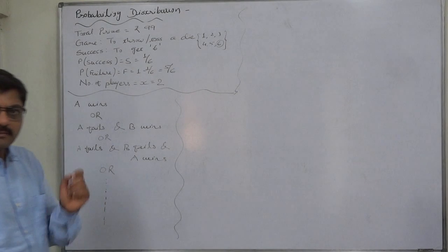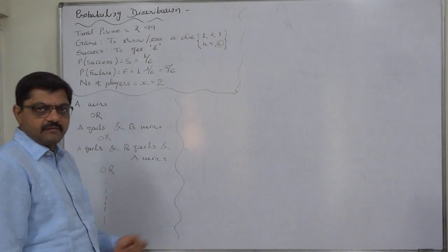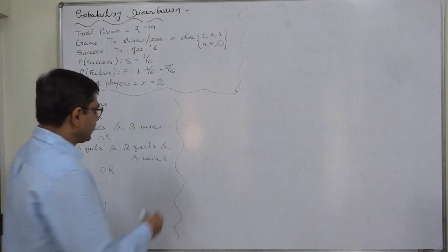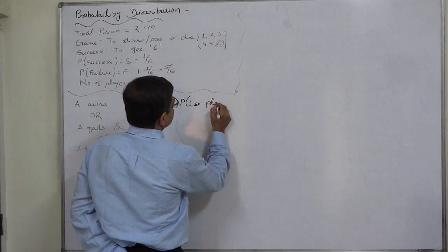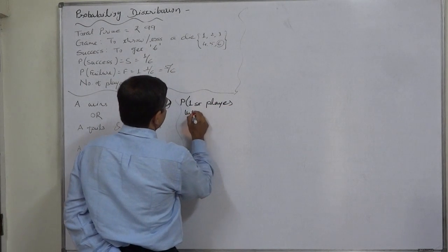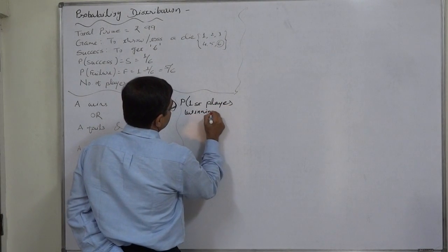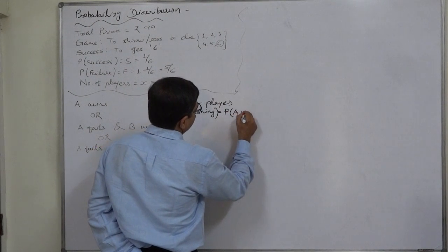Forget the name, probability of first player winning the game, probability of second player winning the game. The probability of first player winning, that is actually probability of A winning.